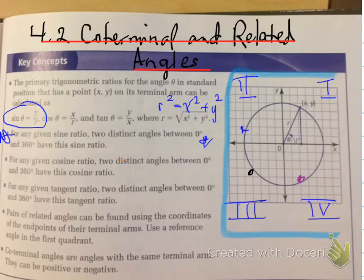When we think about the quadrants, remember how we number them. This is quadrant 1, this is quadrant 2, this is quadrant 3, and this is quadrant 4.